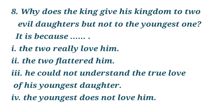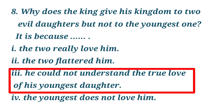Question 8: Why does the king give his kingdom to two evil daughters but not to the youngest one? It is because — I. The two really love him; II. The two flattered him; III. He could not understand the true love of his youngest daughter; IV. The youngest does not love him. Correct option: I.